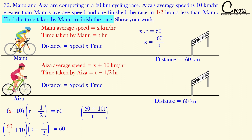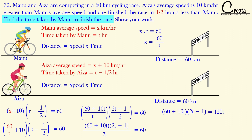Taking the LCM: we get (60 + 10t) upon t, multiplied by (2t − 1) upon 2. On the right-hand side we get 60 into 2t, which is 120t. On the left-hand side, 60 plus 10t — we can take 10 as common to get 10(6 + t). The 120 and 10 cancel out.